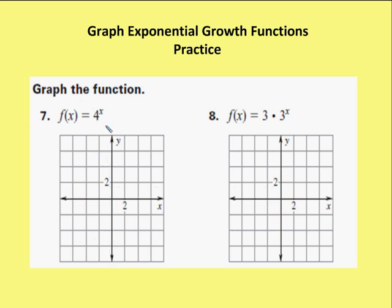Moving on to graphing the function y = 4^x. I substitute 0 for x and get out 1 for y. Substituting 1 for x gives me 4 for y. And 2 for x gives me 16 — I'm already off the charts. I know that the value of y is never going to equal 0. So regardless of what x is, even if it's a negative value, y gets closer and closer to 0. My asymptote is going to be the x-axis. So my graph looks something like this.